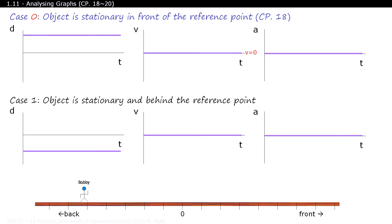So this tells you something about the DT graph and the VT graph. For the DT graph, any time the data points are above the time axis, you're in front of the reference point. And if your data points are below the time axis, then you're behind the reference point. One more thing about the velocity-time graph is that by looking at it alone, you have no idea where they started — you only know the direction that they are moving.